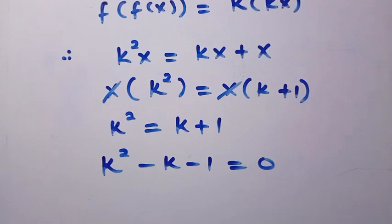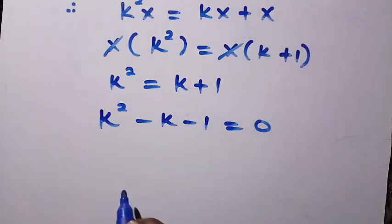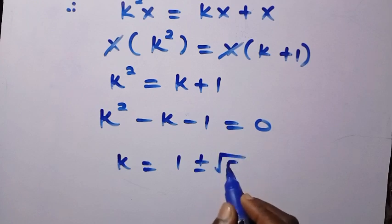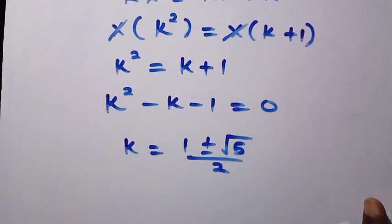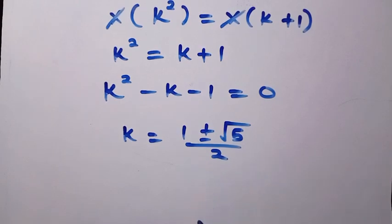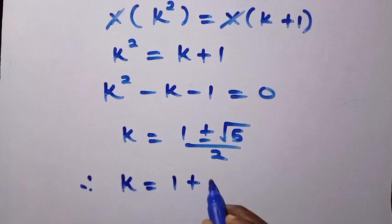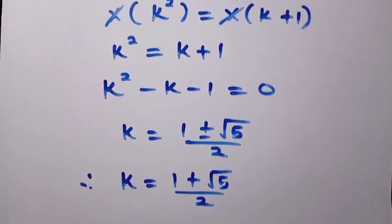Taking k + 1 to the other side gives k² − k − 1 = 0. Solving this quadratically, k = (1 ± √5) / 2. However, since f(x) > 0 and x > 0, we only consider the positive value and neglect the negative one.